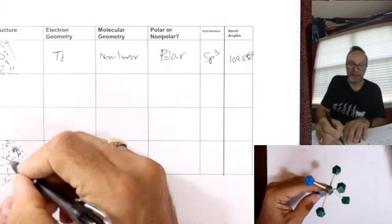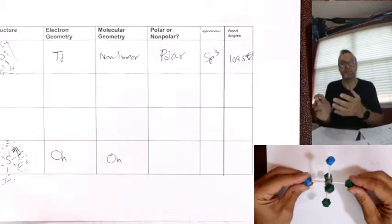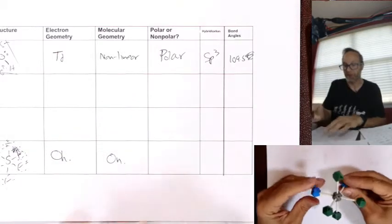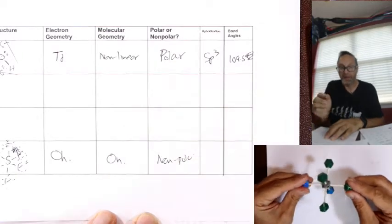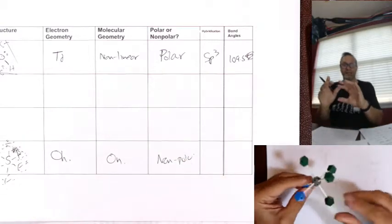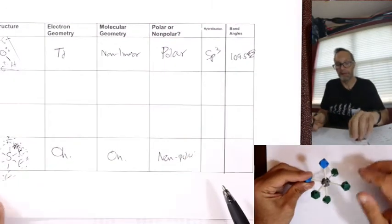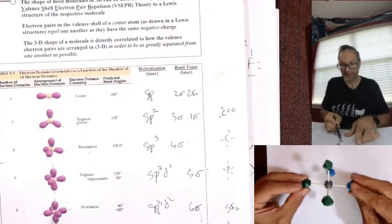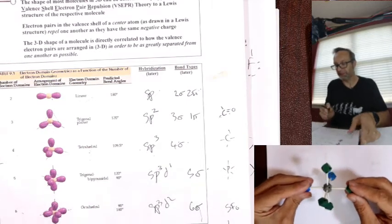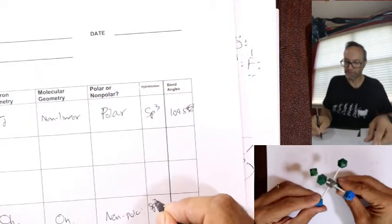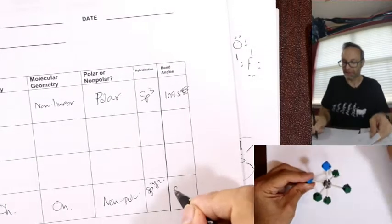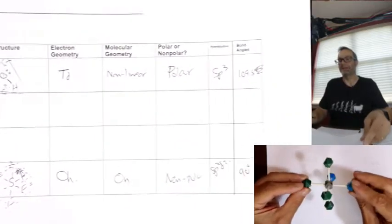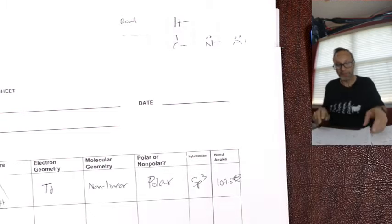Geometry, electron geometry, center atom has six clumps around it. Remember the packet, that's octahedral. Six clumps is octahedral. Molecular geometry, well, there's an atom on the end of each clump, also octahedral. Polar or non-polar? This is an interesting one because every fluorine is across from every other fluorine, so even though those bonds are super polar, they're always canceling, so it's like a really kind of three times over CO2. So that's actually non-polar. Hybridization, six clumps, SP3D2. Bond angles, they're all right angles. So that's 90 degrees.